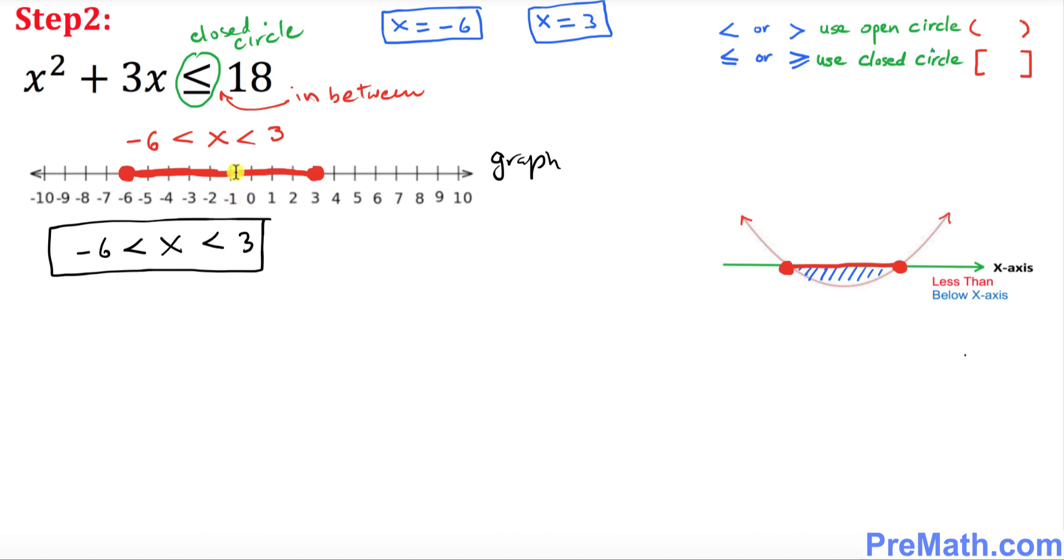And now our solution in set notation is going to be simply x such that x is in between negative 6 and 3. And if you want to put in interval notation, everything you see, I think we have a closed circle, so it's going to be simply negative 6 bracket and then 3 in bracket once again.